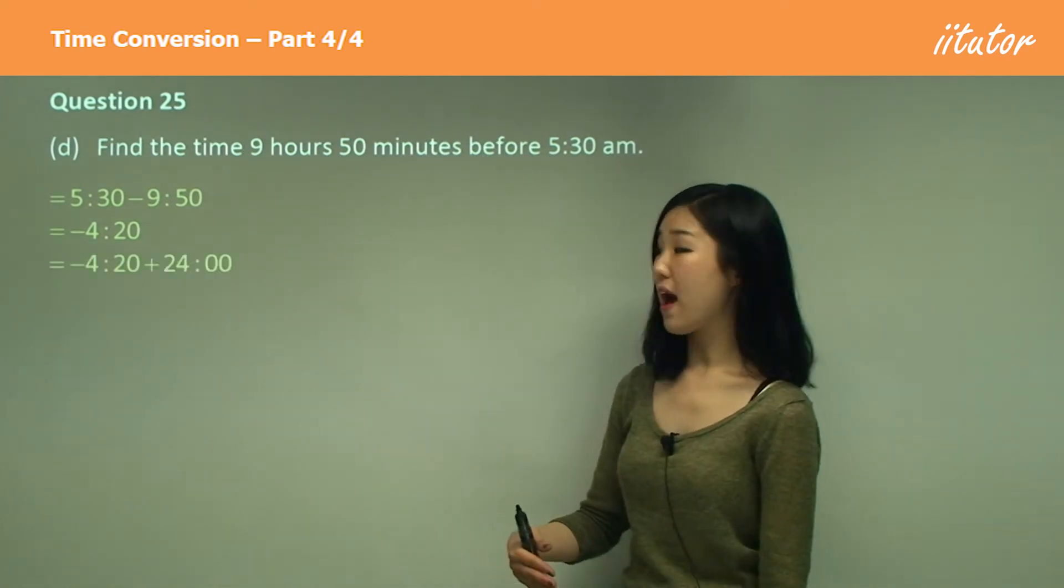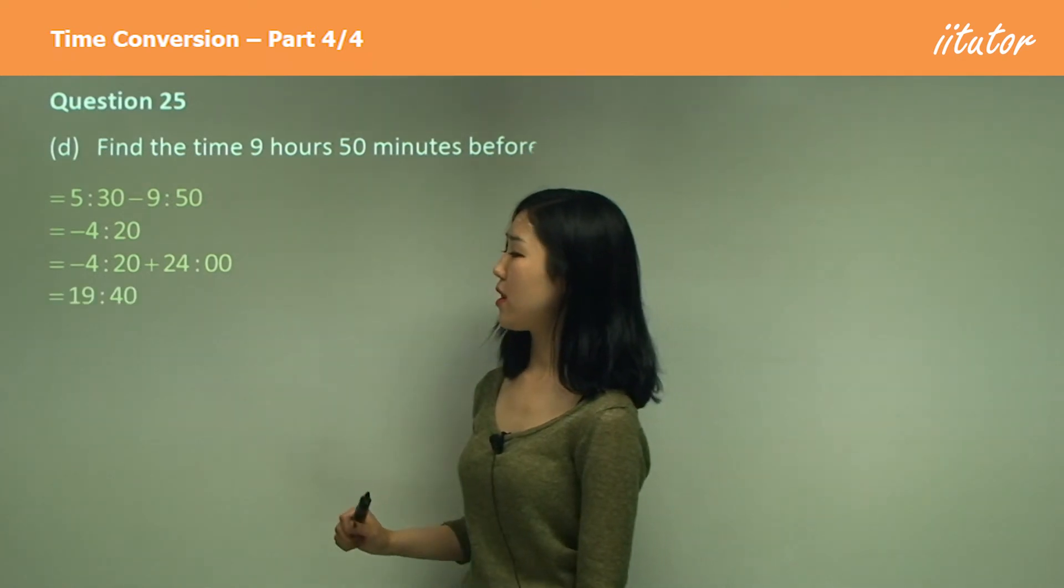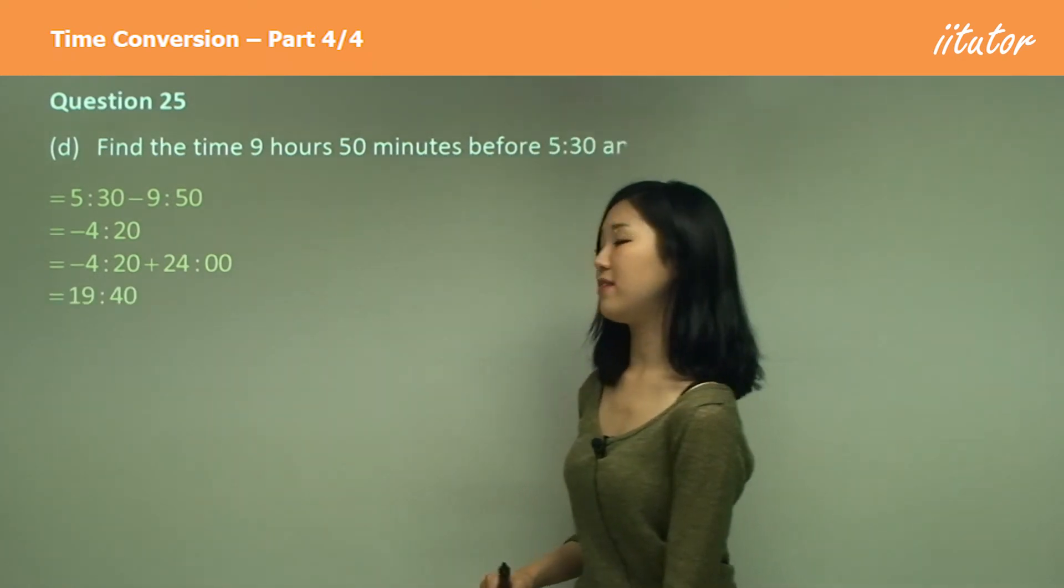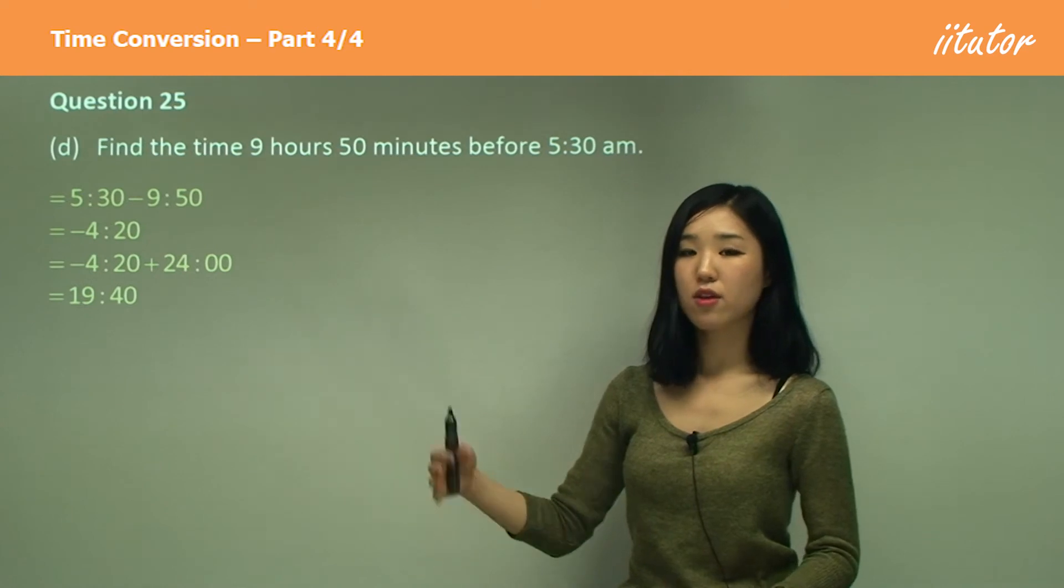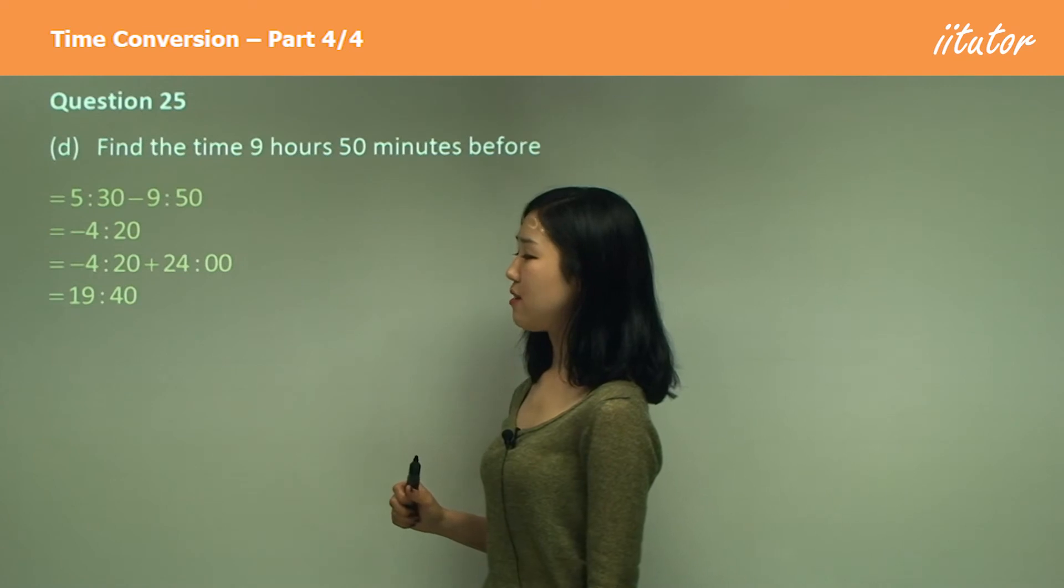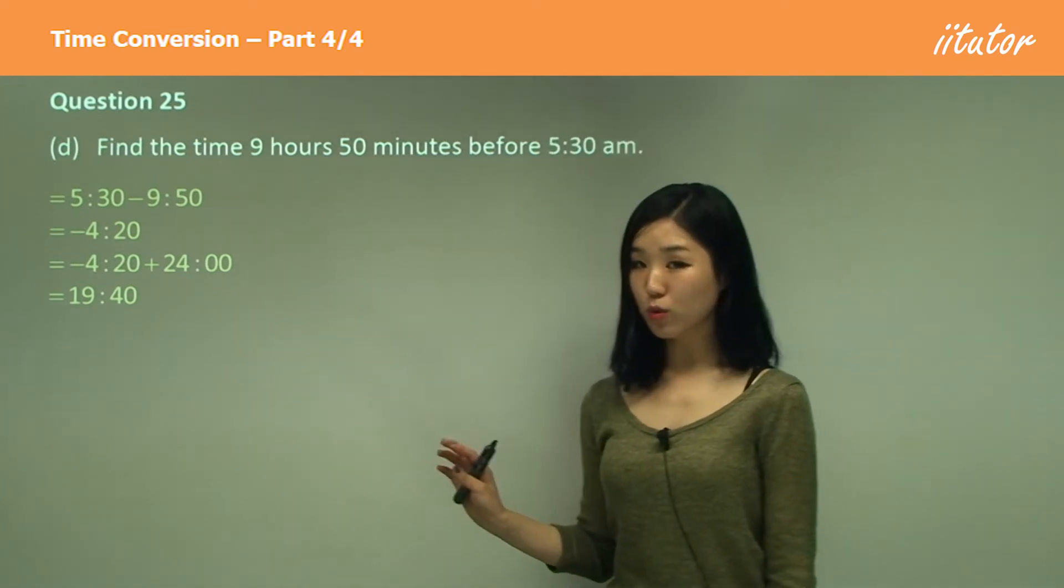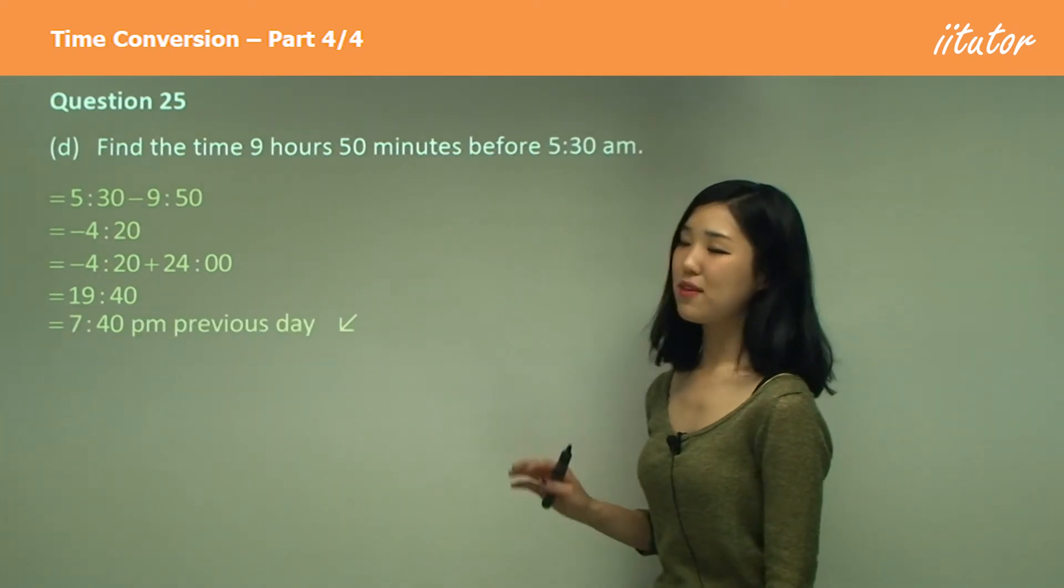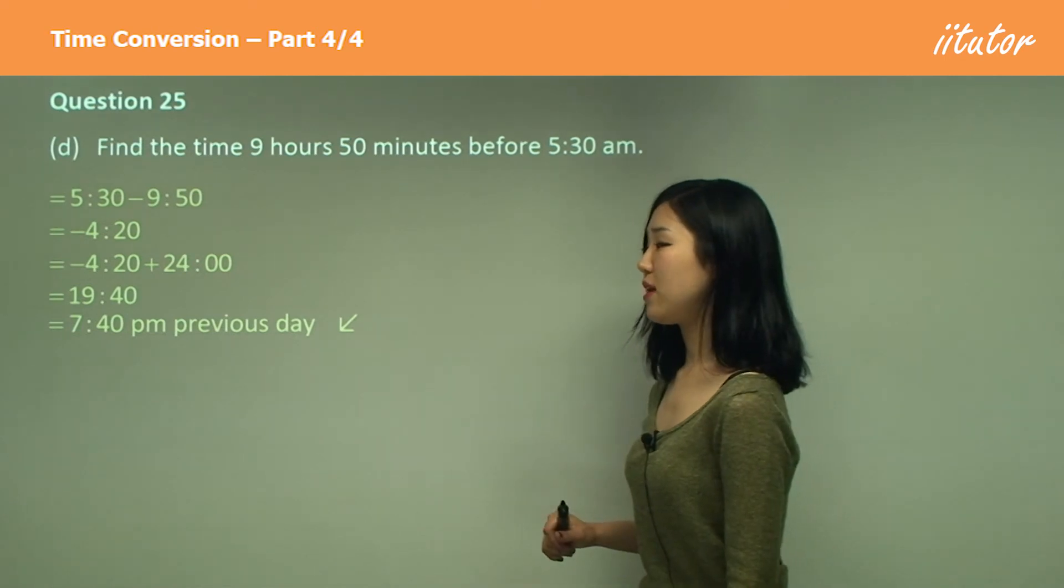If I add the 24 hours, it becomes 19:40, isn't it? If I add an extra 24 hours to make it positive because I don't like working with negative time. And that will give you 19:40. And what's that in normal time? Simply 7:40 p.m.